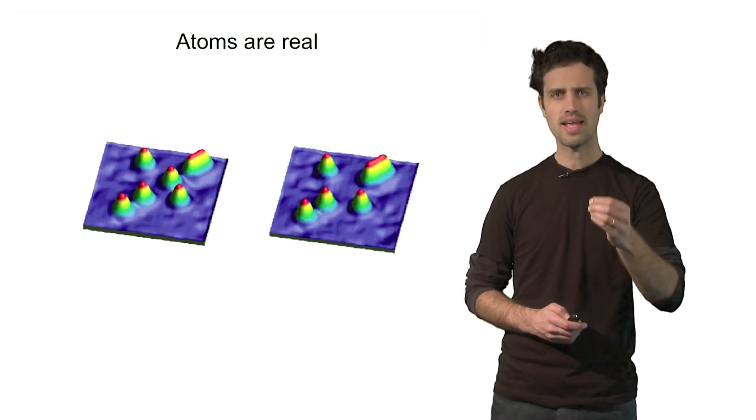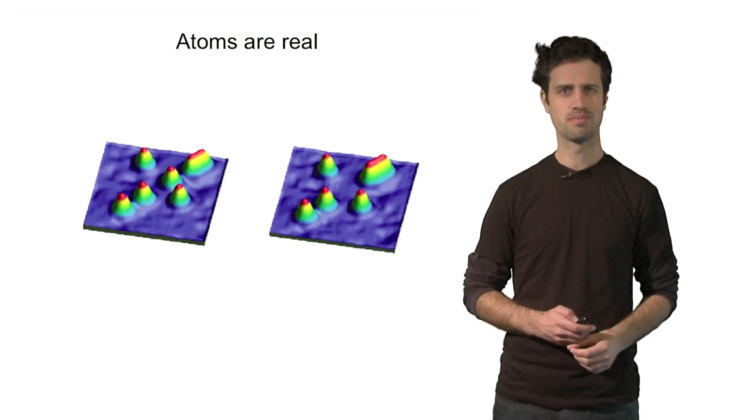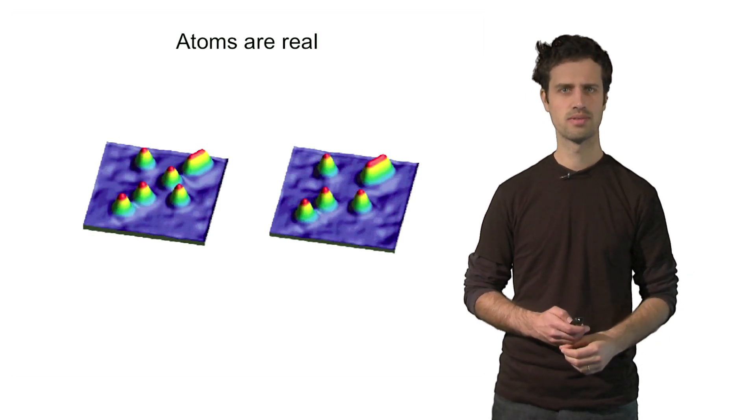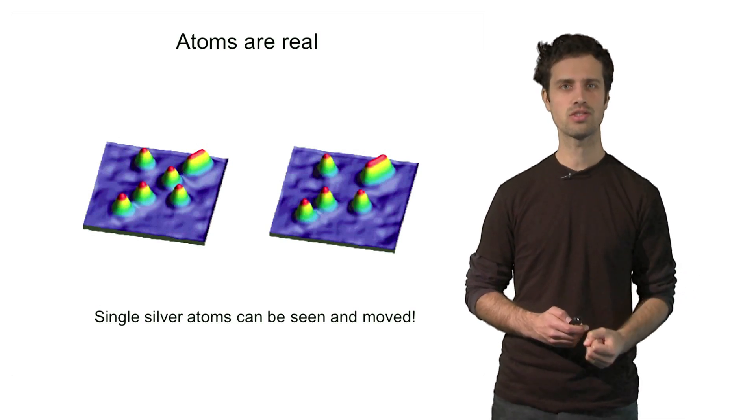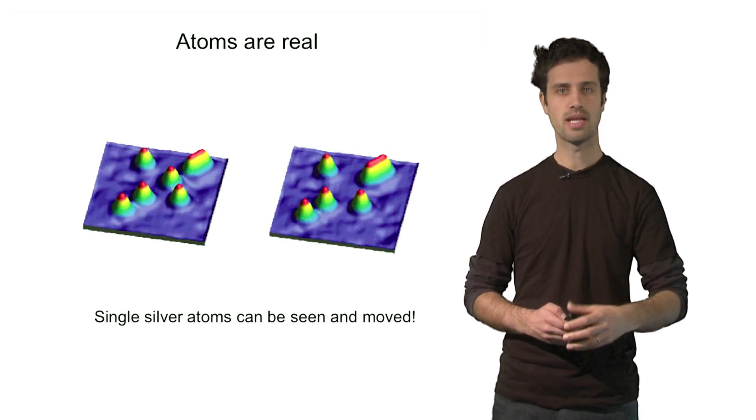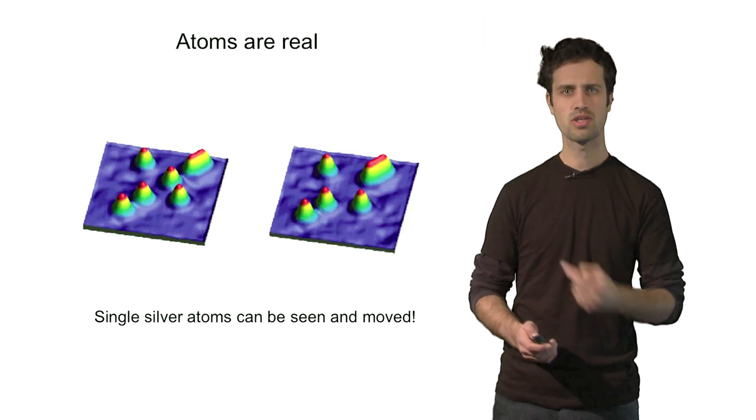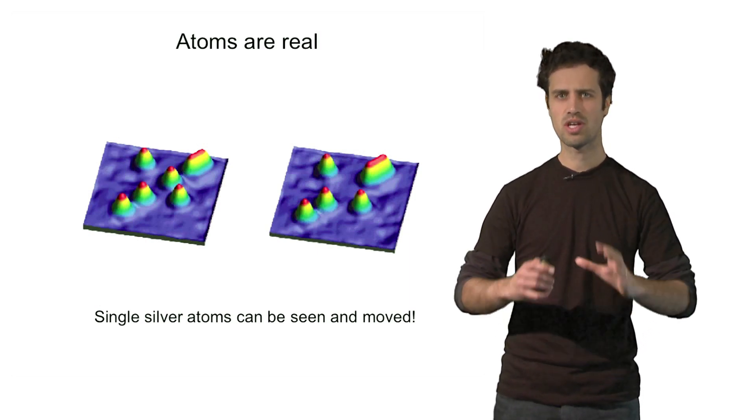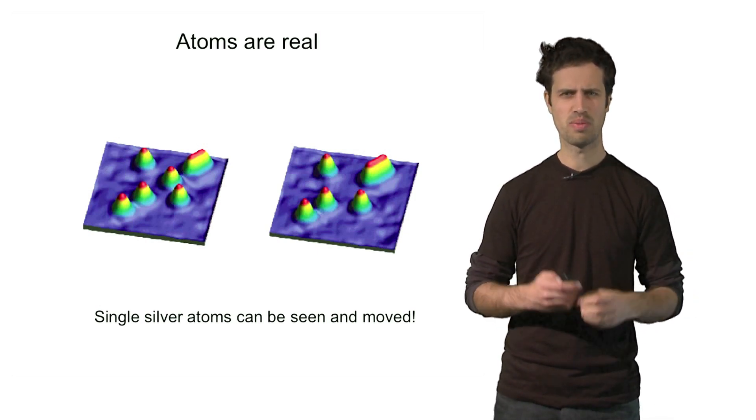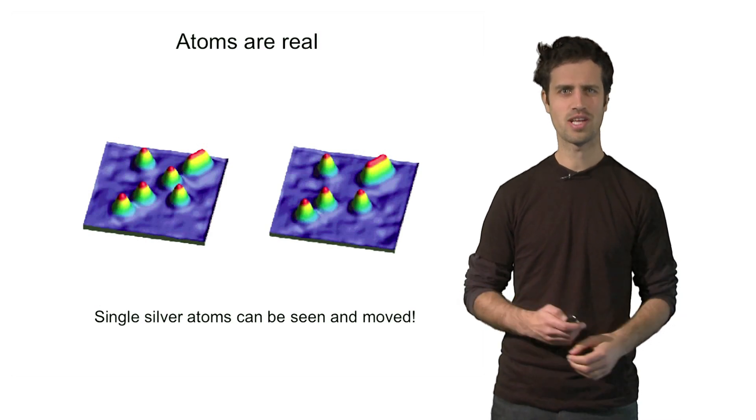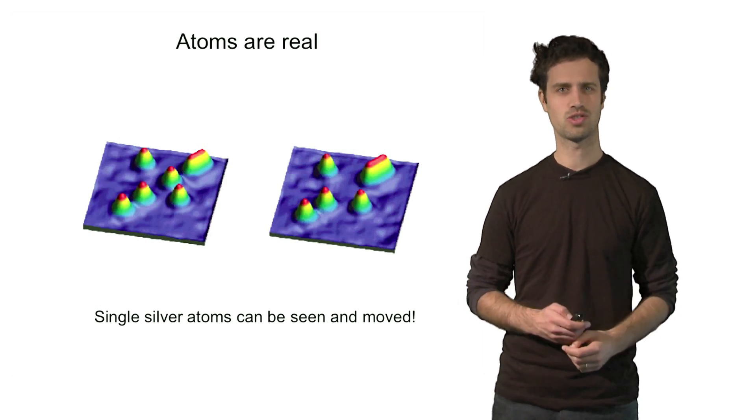So you see that atoms can actually be picked up and change the location, just like a particle would. So atoms are real things, they're real particles, they have a mass, they occupy a volume. So this experiment shows that atoms are not just some kind of abstract notion or the byproducts of the theoretical fantasies of scientists. They're real things.